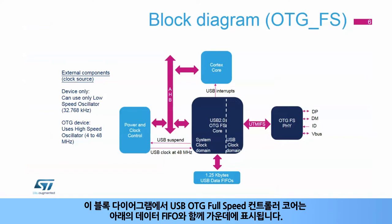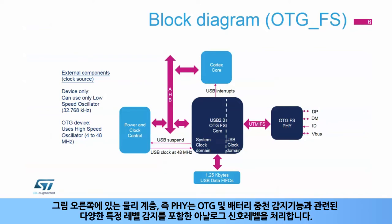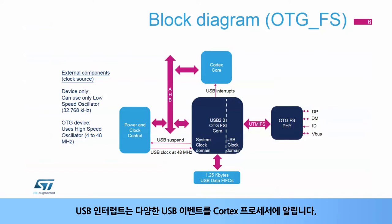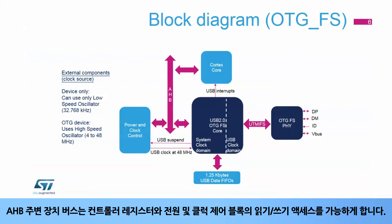In this block diagram, the full-speed OTG USB controller core is shown in the center, with its data FIFOs below. The physical layer, or PHY, on its right side, handles the analog signal levels, including many specific level detections relating to OTG and battery charger detection functions. The USB interrupt goes to the Cortex processor to signal various USB events. The AHB peripheral bus enables read-write access of the controller registers and the power and clock control block.